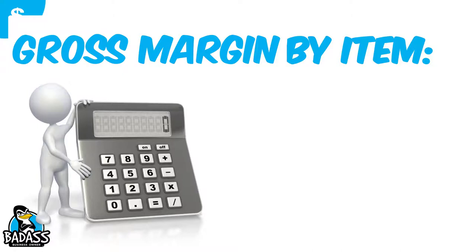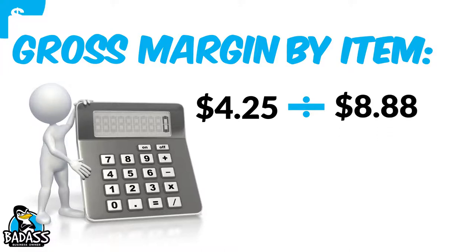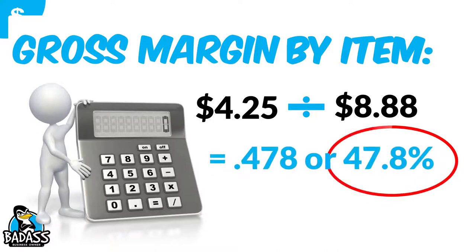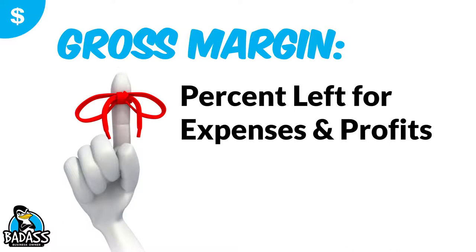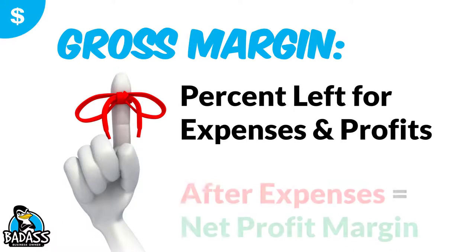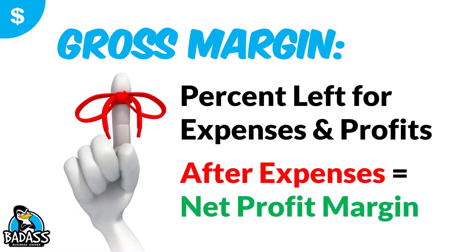Now, if you need to figure it out by item — say you want to know your gross margin on a specific product — you do the exact same thing. Take the cost of goods of $4.25 and divide it by the total sales price of $8.88. That gives you 0.478 — move the decimal and it's 47.8%. Gross margin is the percent left for your expenses and profits. After your expenses is where you get your net profit margin. So you can express both your bottom line profit and your gross profit in both a dollar and a percentage amount.